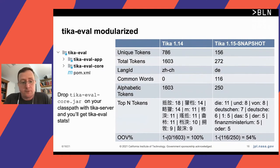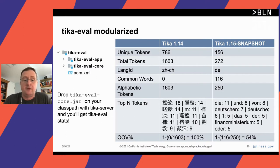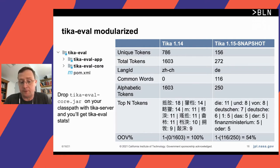We've modularized Tika eval. You can now drop the Tika eval core jar into your class path for Tika server and automatically get Tika eval stats run on your files. This is useful for automatic detection of garbled text. For example, Tika 1.14 pulled text out of a file with language ID Chinese, yet there were zero common Chinese words — the top tokens were all garbage. Tika 1.15 with a slight change in encoding detection was pulling out German with a much better out-of-vocabulary rate.